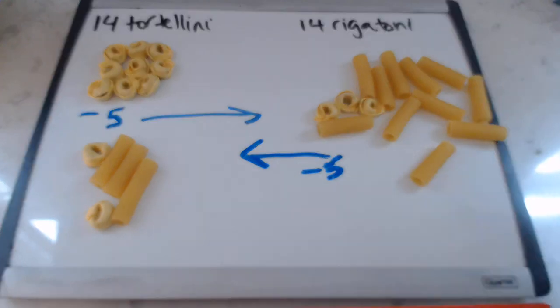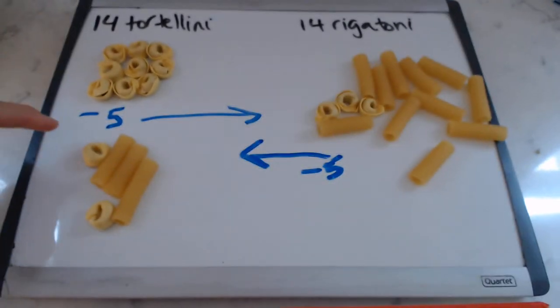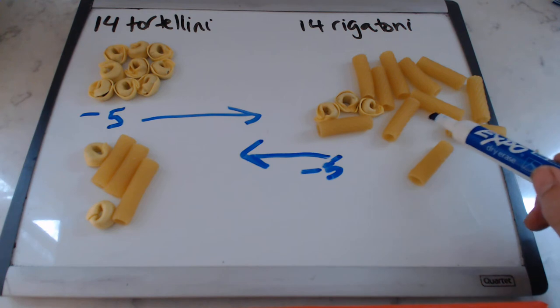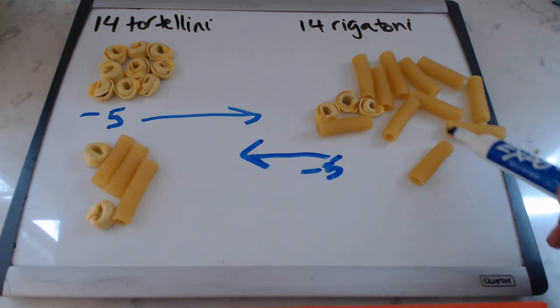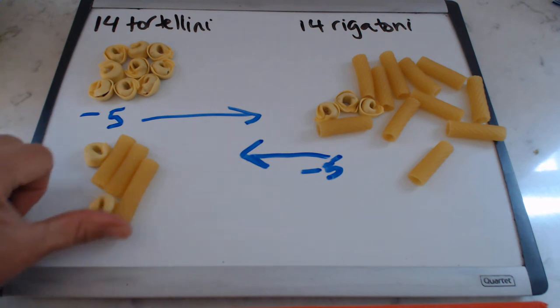So you know that you started with 14 and you took away 5 and put them over here, which gave you 19. But then you took away 5 from over here and sent them over there. So now you have the same number on each side.